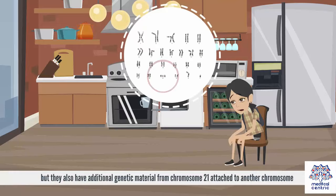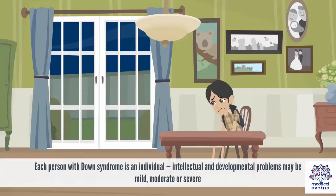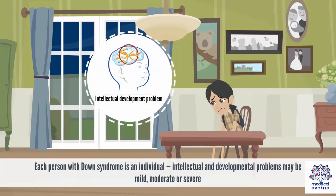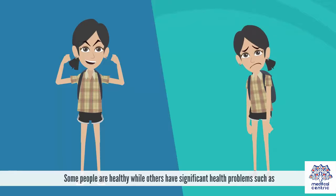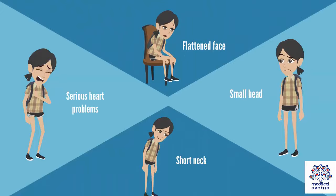Signs and Symptoms: Each person with Down syndrome is an individual. Intellectual and developmental problems may be mild, moderate, or severe. Some people are healthy, while others have significant health problems such as serious heart problems, flattened face, small head, short neck, protruding tongue, and upward slanting eyelids — also known as palpable fissures.